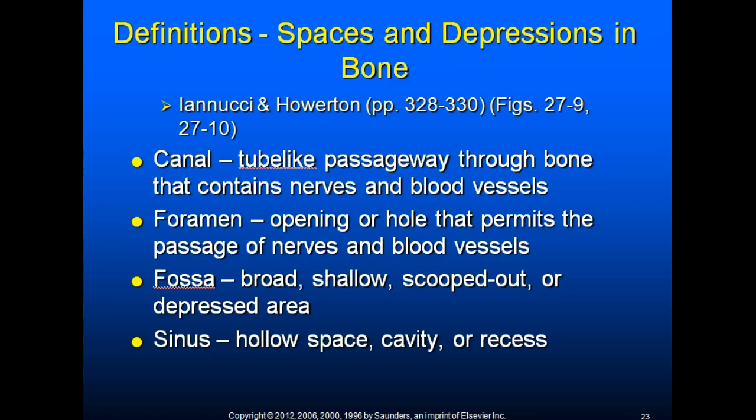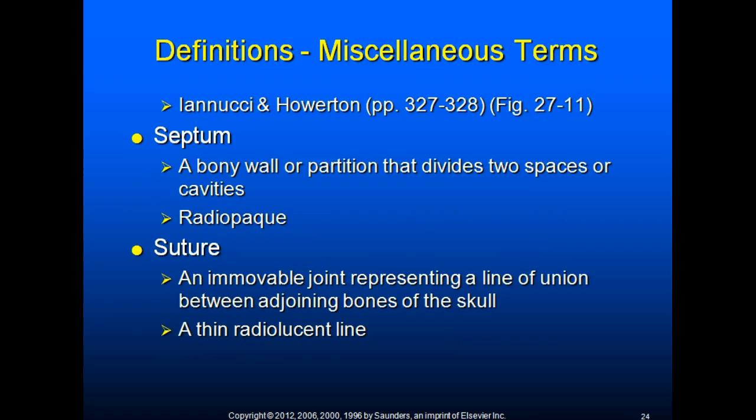Spaces and depressions in bone are referred to as: a canal, which is a tube-like passageway through bone that contains nerves and blood vessels; a foramen, which is an opening or hole that permits the passage of nerves and blood vessels; a fossa, which is a broad, shallow, scooped-out or depressed area in the bone; and sinus spaces, which are hollow spaces, cavities, or recesses. A septum is a bony wall or partition that divides two spaces or cavities, and septa are radiopaque. A suture is an immovable joint representing a line of union between adjoining bones in the skull, appearing as a thin radiolucent line.